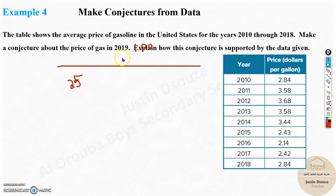Make a conjecture about the price of gas in 2019. Explain how this conjecture is supported by the given data.